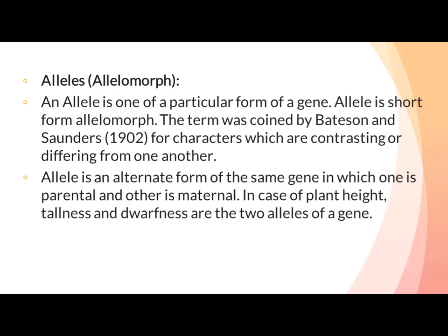Allele میں سے ایک parental ہوتا ہے اور دوسرا maternal۔ In case of plant height, tallness and dwarfness are the two alleles of a gene. Allele ہمارے پاس gene کے alternate forms ہوتے ہیں — ایک father کی طرف سے اور دوسرا mother کی طرف سے آتا ہے۔ Plant height کے لیے دو alleles ہوتے ہیں: ایک tallness کے لیے اور دوسرا dwarfness کے لیے — اور یہ دونوں مل کر ایک gene بناتے ہیں۔